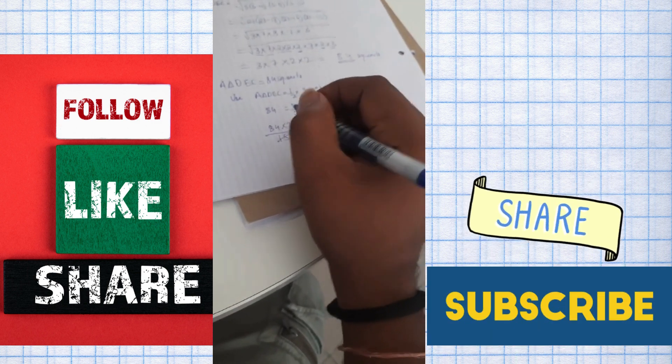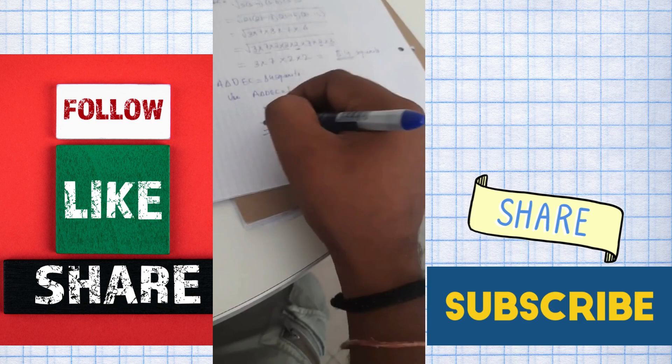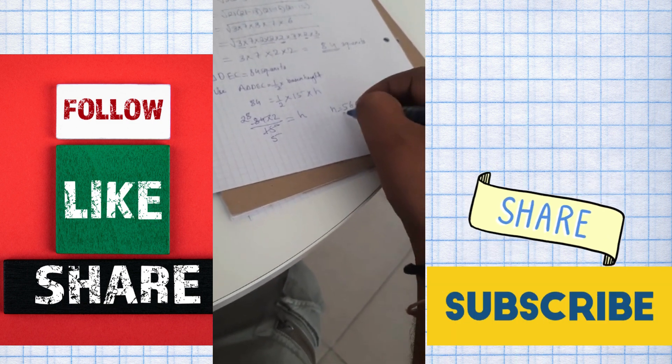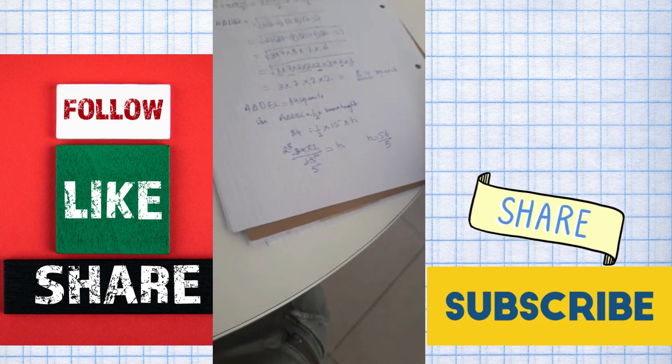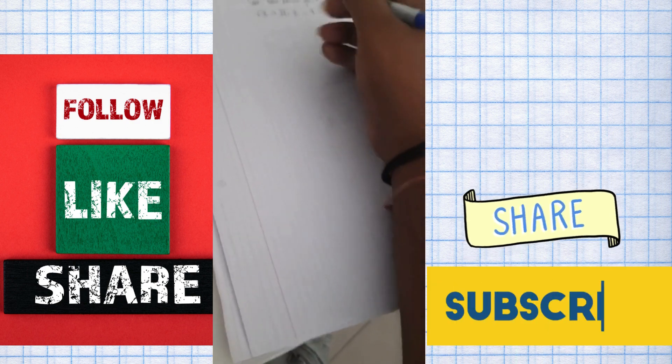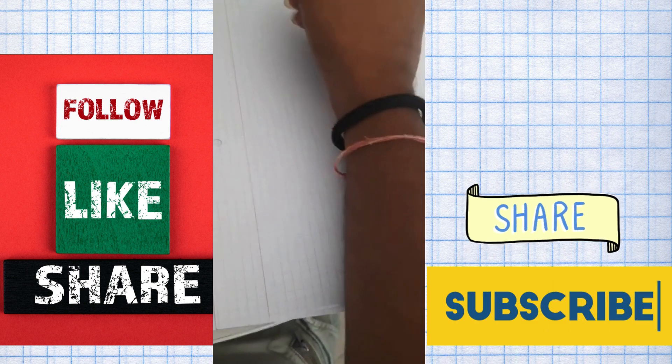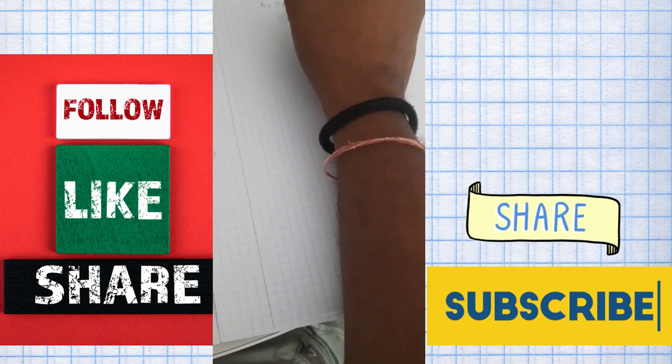So we have 84 into 2 upon 15 which is equal to H. Now if we cut this part, 3 fives are 15. So H is 56 upon 5. Let's keep it as it is.